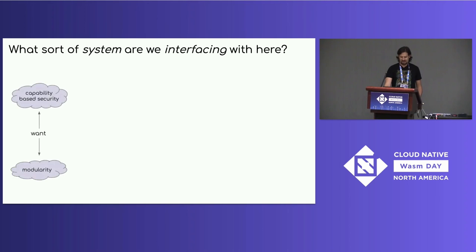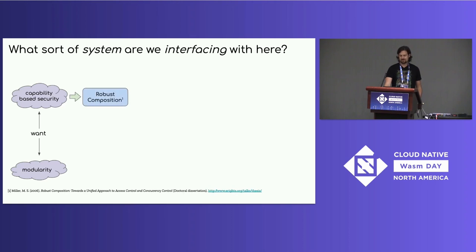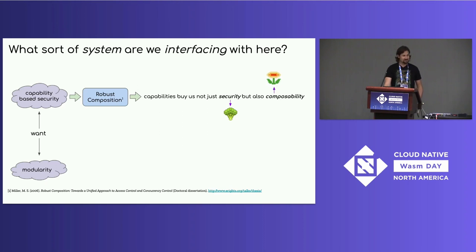From experience, we had high-level goals of capability-based security and modularity. So we went about doing background research and seeing what work had already been done that we could learn from. In the direction of capability-based security, a great resource is Mark Miller's dissertation on robust composition. The takeaway for me was that capabilities give us not just security — which is like eating our vegetables — but also composability, which is like the fire flower that makes us Fire Mario and productive.